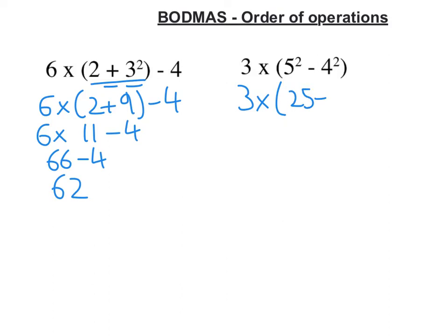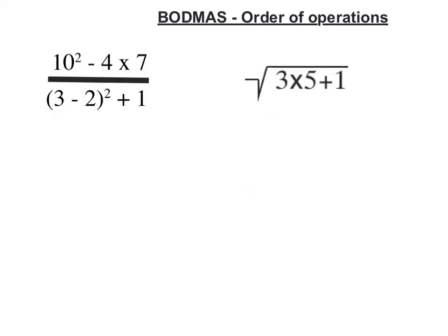So we're going to get 5 times 5 is 25. Take away 4 times 4 is 16. I then do things in brackets before anything else. So 25 take away 16 is 9. 3 times 9 is 27.